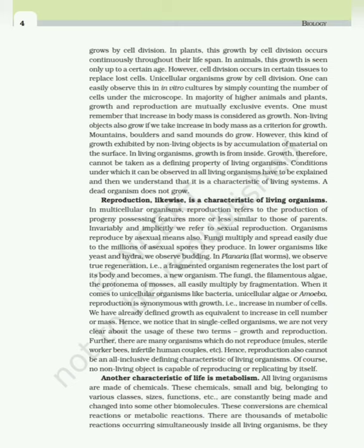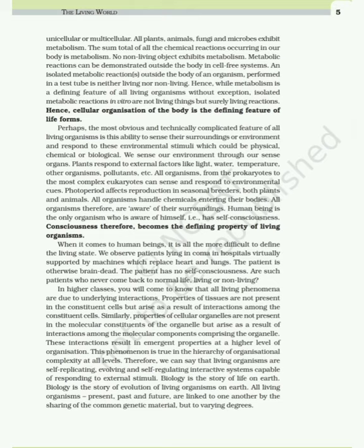Another characteristic of life is metabolism. All living organisms are made of chemicals — small and big — belonging to various classes, sizes and functions, which are constantly being made and changed into other biomolecules. These conversions are chemical or metabolic reactions. There are thousands of metabolic reactions occurring simultaneously inside all living organisms, be they unicellular or multicellular. All plants, animals, fungi and microbes exhibit metabolism. No non-living object exhibits metabolism. Metabolic reactions can be demonstrated outside the body in cell-free systems, but isolated metabolic reactions in vitro are neither living nor non-living. While metabolism is a defining feature of all living organisms without exception, cellular organization of the body is the defining feature of life forms.